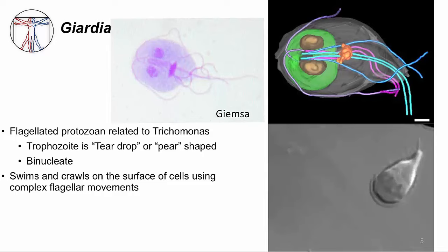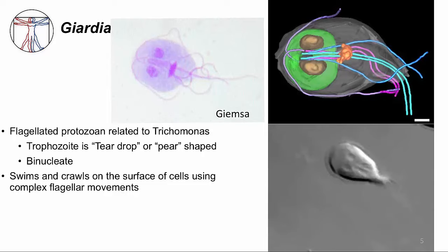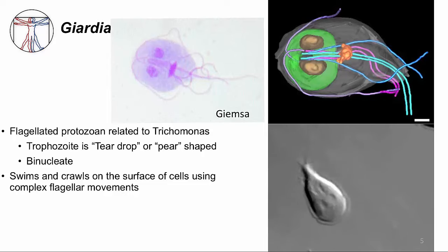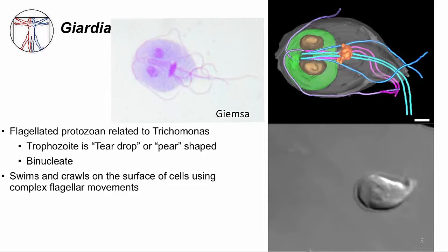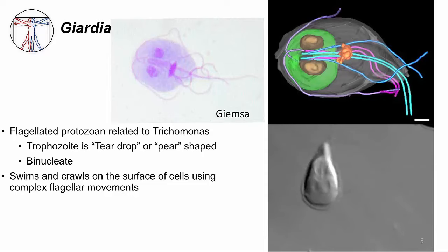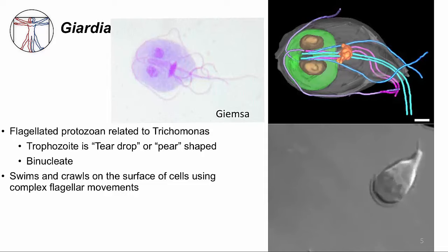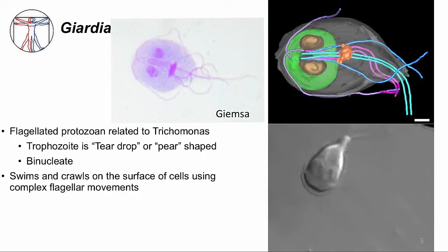Here's a trophozoite outlined in pink from a stain, again showing all the structures. In the video on the bottom, you can see that these have really complex movements. It's hard to believe that this is a unicellular organism. You might imagine that the trophozoite is swimming around to get somewhere — well, that's correct.